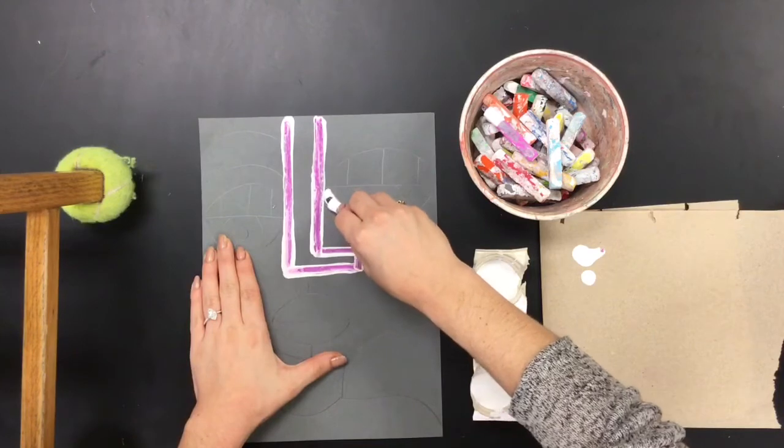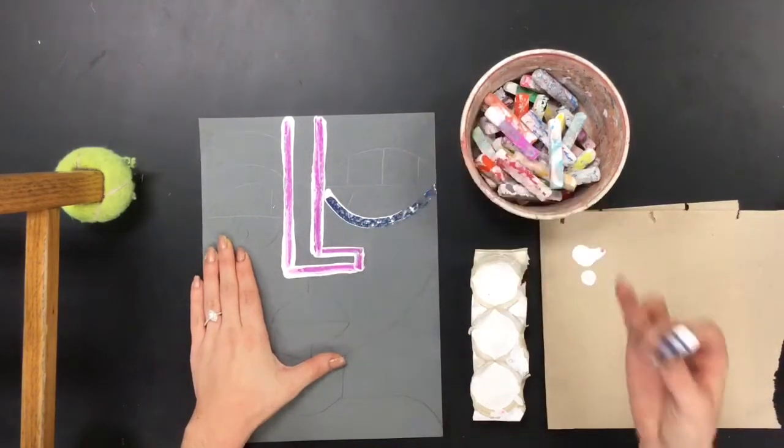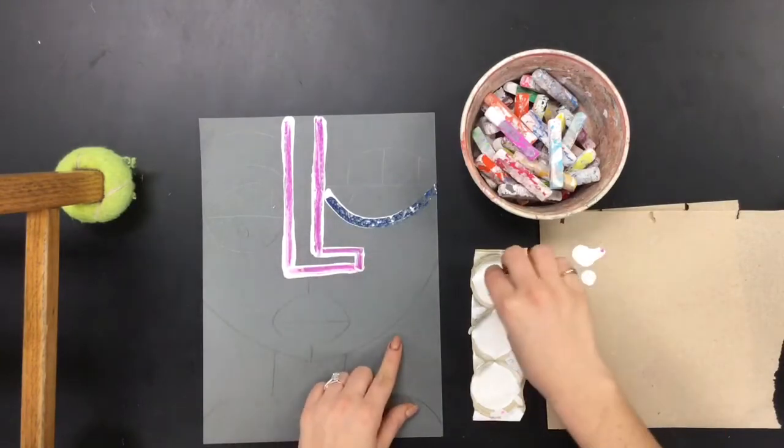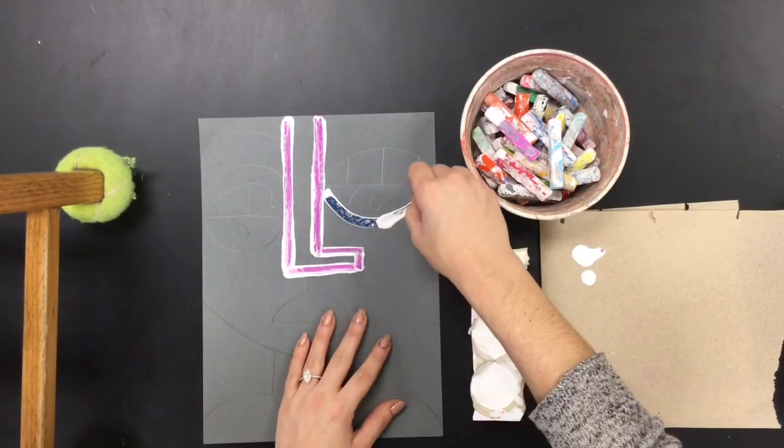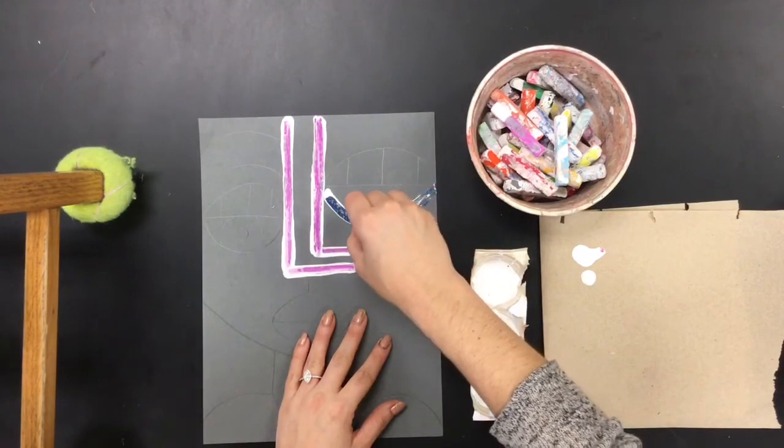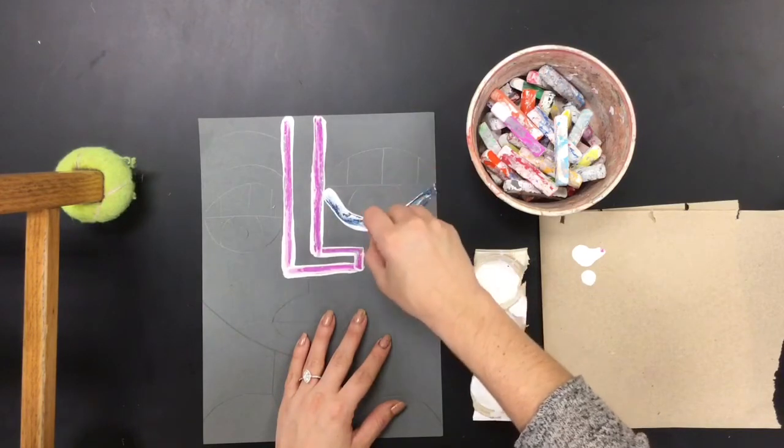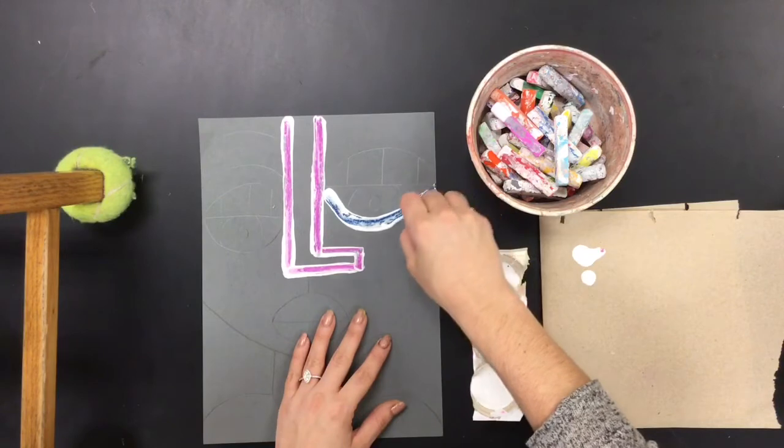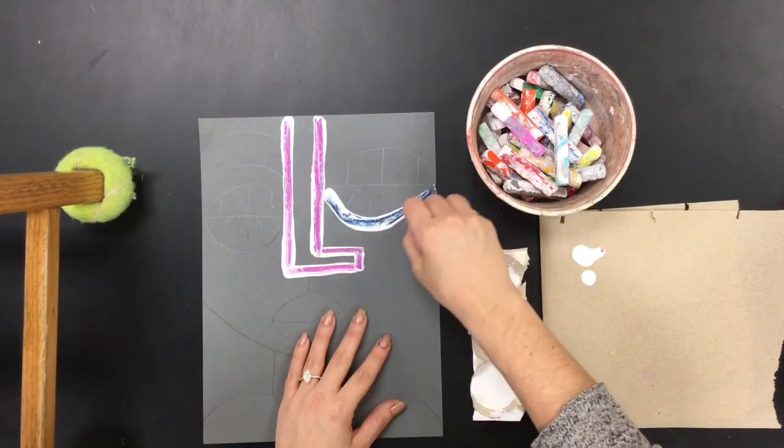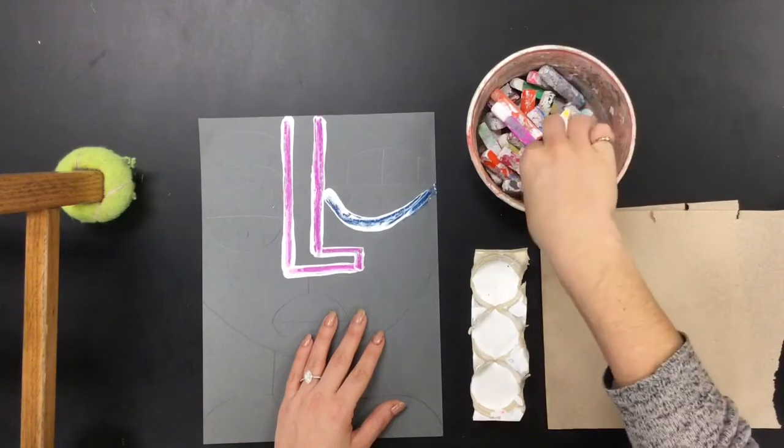Now I'm going to continue to do even, consistent lines of chalk and paint all over my original drawing, covering up those pencil lines as best as I can, making sure my chalk and my paint are even. As you notice, boys and girls, every time I move to a new line or a new shape, I am switching my colors.